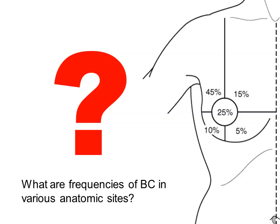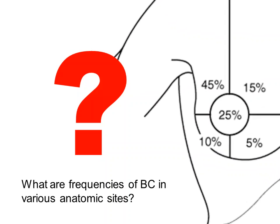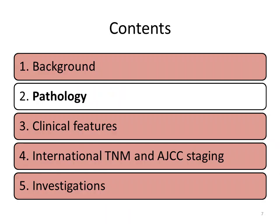Regarding the frequency of breast carcinoma in various anatomical sites: the breast is divided into five areas — upper outer quadrant, upper inner quadrant, lower outer quadrant, lower inner quadrant, and nipple-areola complex. Cancer is more frequent in the upper half, constituting 60 percent, while 40 percent is in the nipple-areola complex and lower half. In the upper half, almost 45 percent is in the upper outer quadrant and 15 percent in the upper inner quadrant.